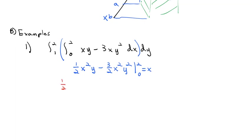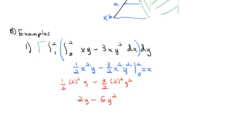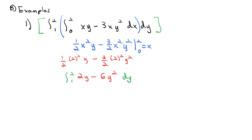Plugging 2 in, we get ½ times 2² times y minus (3/2) times 2² times y². Then we subtract and plug 0 in — but that gives 0, so we're subtracting nothing. Simplifying: 2²=4, divided by 2 is 2y; 2²=4, divided by 2 times 3 is 6y². So the result of the inside integral is 2y minus 6y². Now we're ready to do the outside integral from 1 to 2 dy.